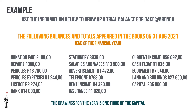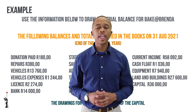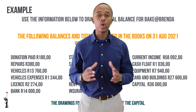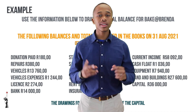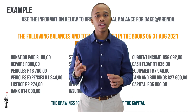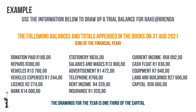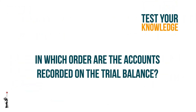Use the information below to draw up a trial balance for Bake at Brenda's. The following balances and totals appeared in the books on 31 August 2021, the end of the financial year. The balances are not in the correct order — can you remember which accounts will be recorded first, second, third? Quickly discuss this with a friend in class.